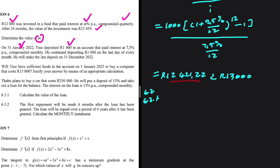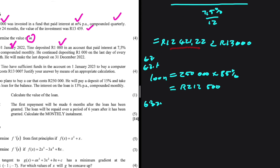He wants to buy a car for 250,000, will deposit 15% and finance the rest. The value of the loan equals 250,000 × 85%, because 15% is the deposit. The loan amount equals R212,500.